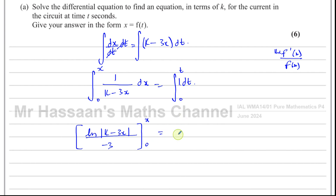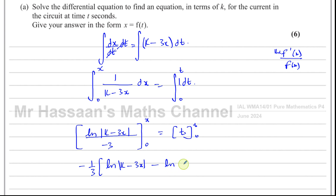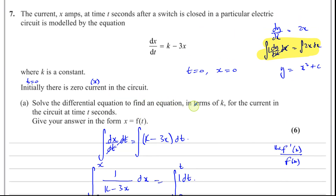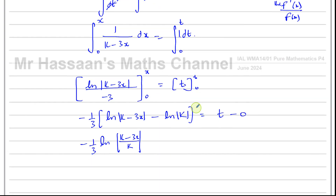Taking out the factor of minus 1/3, I evaluate: ln|k minus 3x| minus ln|k|, since minus 3 times 0 is 0. On the right side I get t minus 0. This simplifies to minus 1/3 times ln|(k minus 3x)/k| equals t.